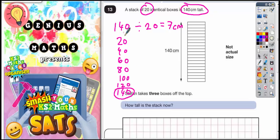In other words, 140 divided by 20 must be 7 if you do it in reverse. So each one of these boxes is 7cm tall.